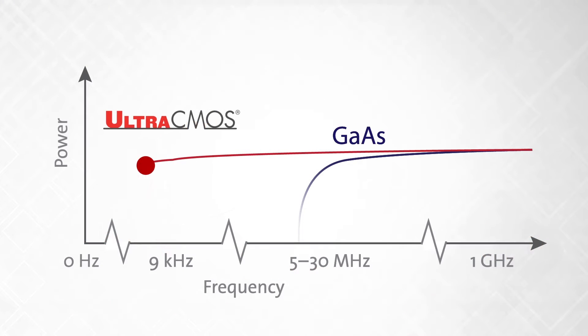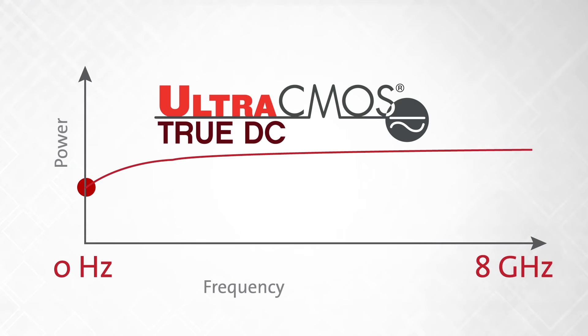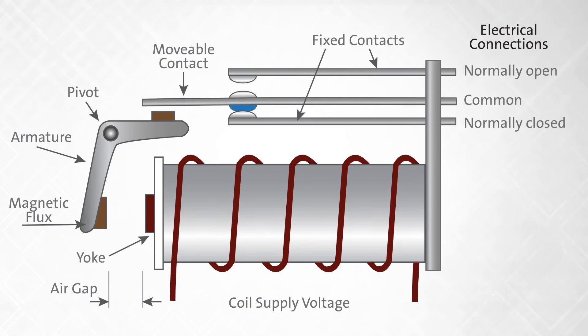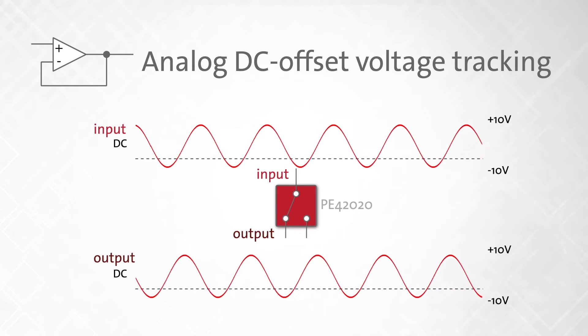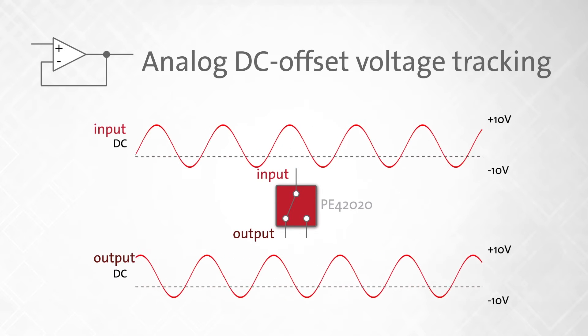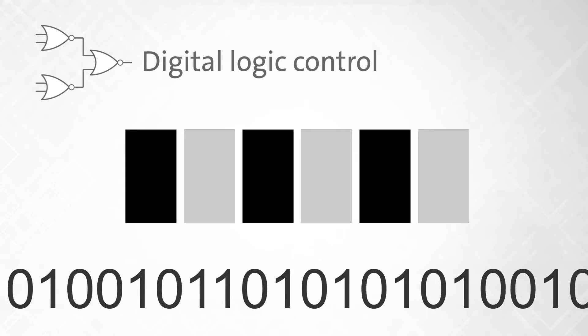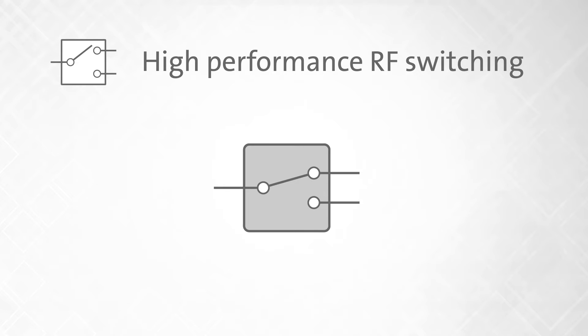We demonstrated this potential by releasing the world's first RF switch to operate at 0 Hz, replacing mechanical relays while integrating analog, digital, and RF functions on a single die in order to enable features such as analog DC offset voltage tracking, digital logic control, and high-performance RF switching.